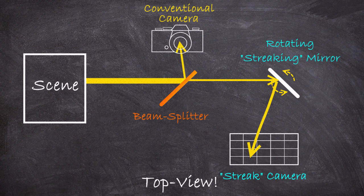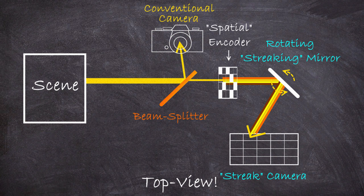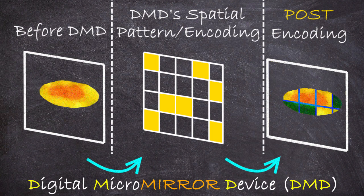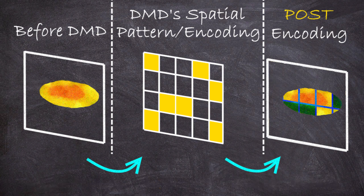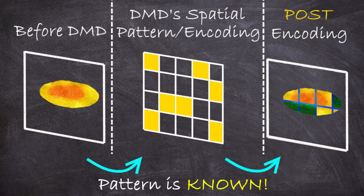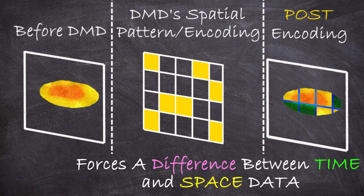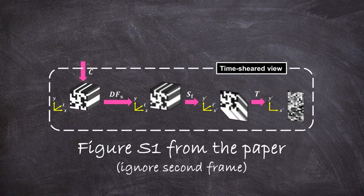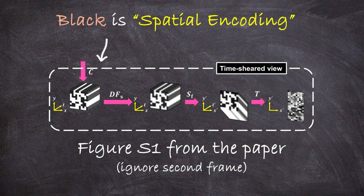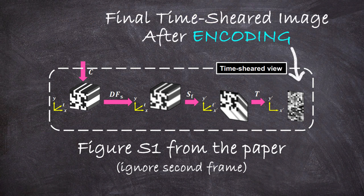To help with things the final piece of the puzzle is that before light hits the streak camera it is spatially encoded which is fancy talk for it passes through a digital micrometer device or DMD that basically overlays a pattern onto the light before it is time sheared. The key thing though is that this pattern that gets superimposed is known and because it is known it applies a certain amount of I guess you could say tagging or labeling to the image in terms of what light is coming from what place in space